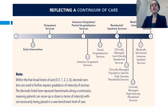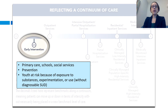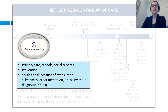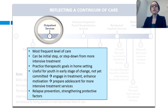Let me start by talking about the continuum of care that exists for adolescent substance use disorder treatment, from the American Society of Addiction Medicine. We begin with early intervention — services focused in the primary care office and schools, social services, prevention efforts, and interventions targeted at youth who are at risk because of exposure to substances, who may begin with experimentation but don't yet have a diagnosable substance use disorder. We then come to outpatient services, the most common and frequent level of care, which can be an initial step in treatment or a step down from a more intensive setting. It's useful for youth in an early stage of change who are not yet committed to further treatment, and allows you to engage them and enhance their motivation.